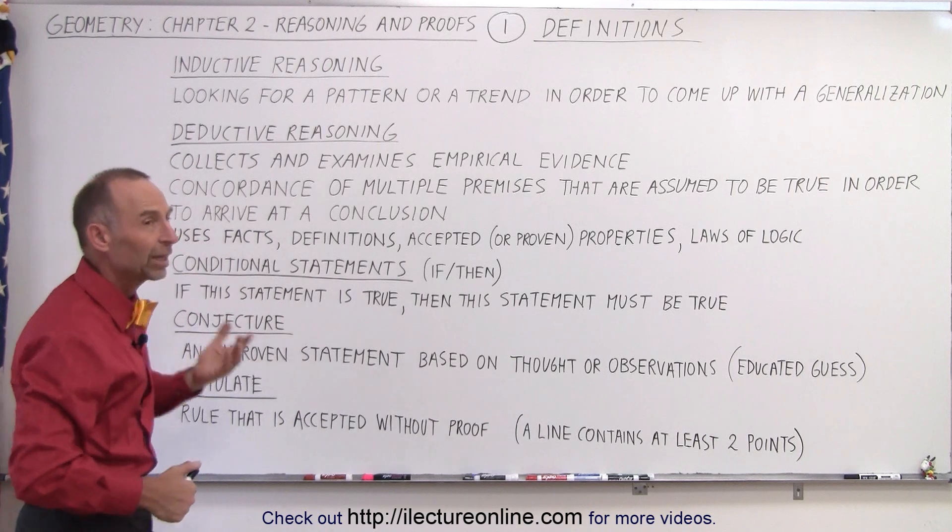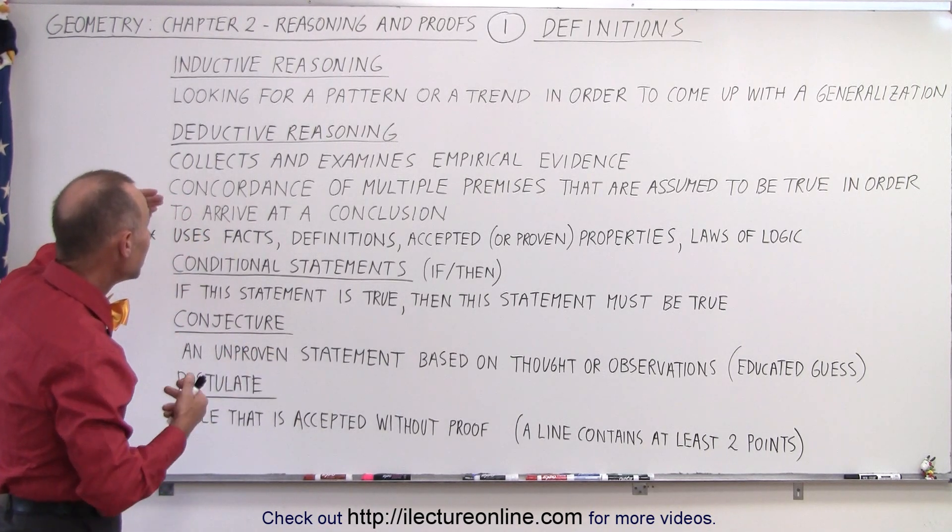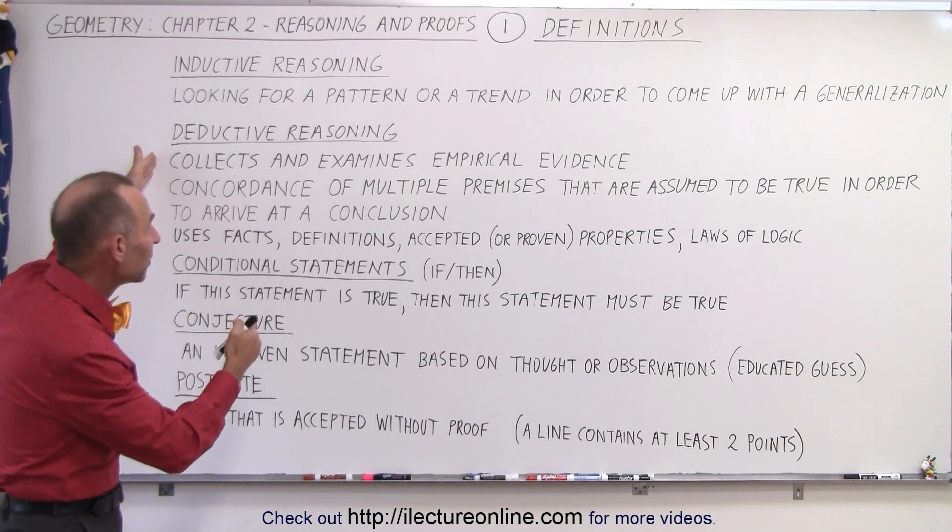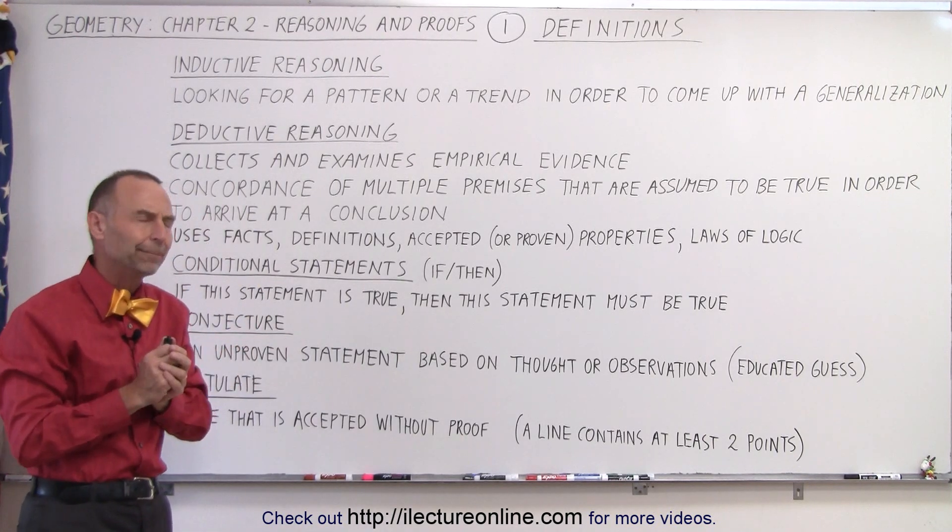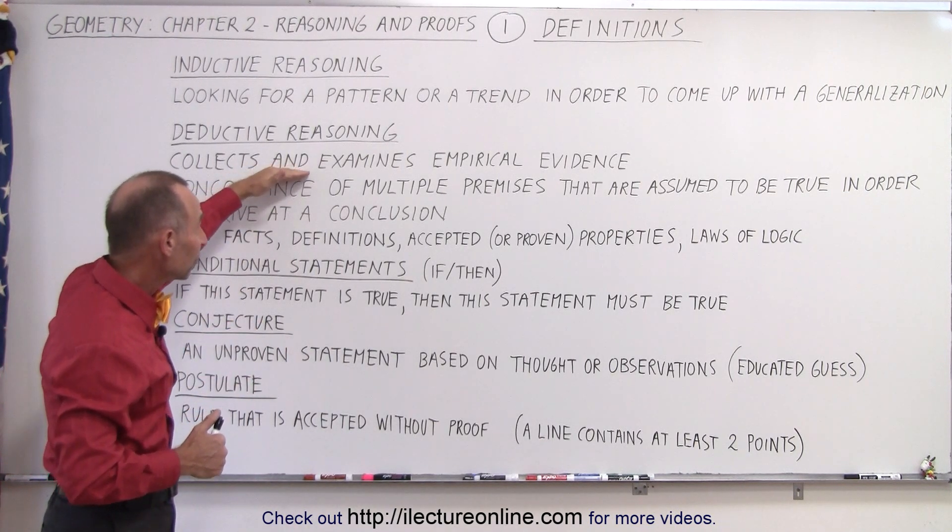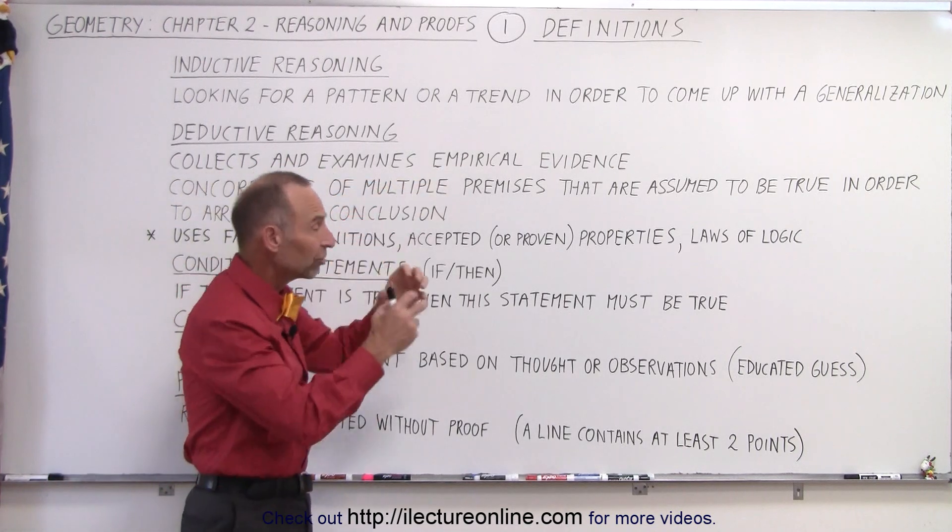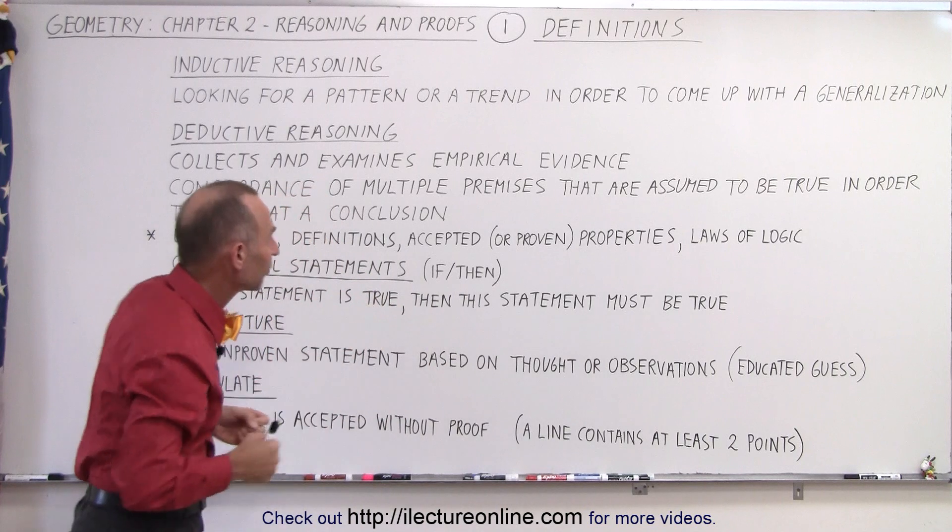Deductive reasoning is something entirely different. What is it? It's a means of collecting and examining empirical evidence. So what do we mean by that? Well, we look for things, real data, real information, real things that we can touch and feel and look at. That's called empirical evidence. So real evidence.